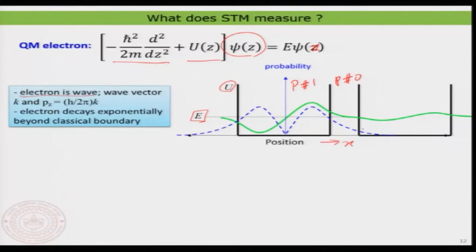If I bring another box next to it — another potential well — you will see that there is a finite probability for this electron penetrating over the space, which means the same electron is also present in the second box. The energy of the electron is the same because this is elastic tunneling, and you see the amplitude has decreased. The amplitude is the measure of how much electron is present there.